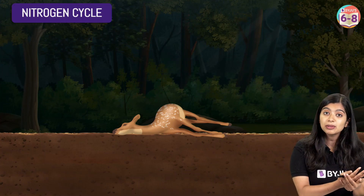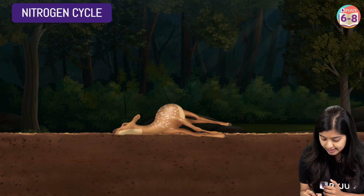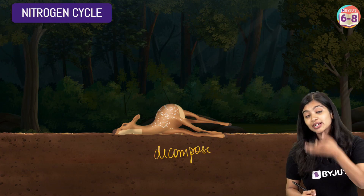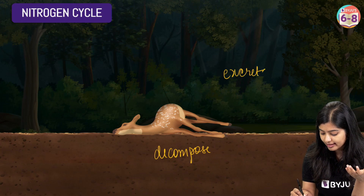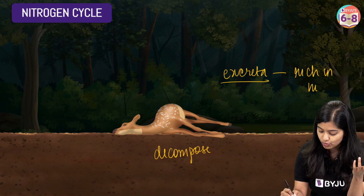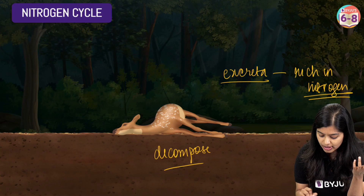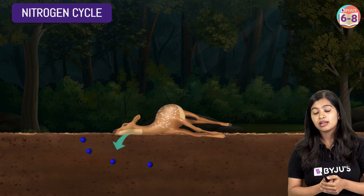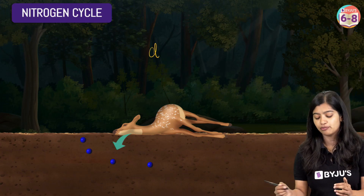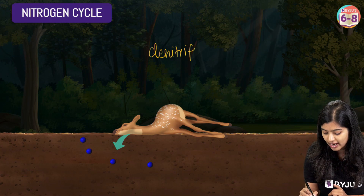Once organisms have utilized the nitrogen, whether plants, animals, or any other living organisms, they eventually complete their lifespan and die. Bacteria will then decompose these organisms, and during their lifespan these organisms also excrete waste material. All of this is rich in nitrogen and gives out nitrogenous compounds. In the soil, apart from nitrogen-fixing bacteria, we have another kind known as denitrifying bacteria.